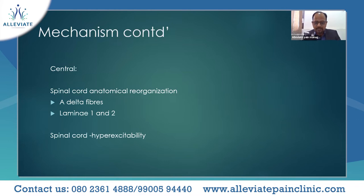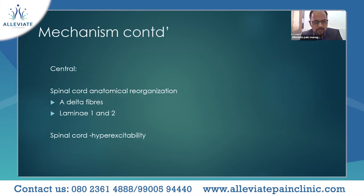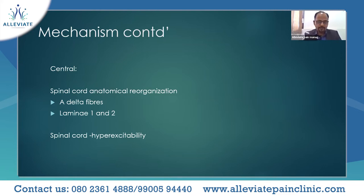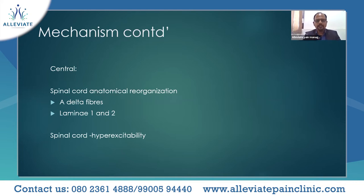There is crosstalk between the laminae of the spinal cord — Rexed laminae — so a touch is felt as pain. Centrally, spinal cord anatomical reorganization occurs: A-delta fibers conduct pain, and wide dynamic range neurons in laminae 1 and 2 respond inappropriately. This leads to spinal cord hyper-excitability, where the threshold is reduced and the cord responds to any stimulus.